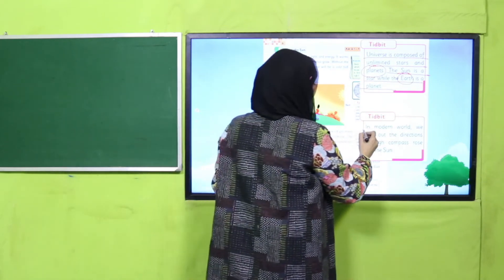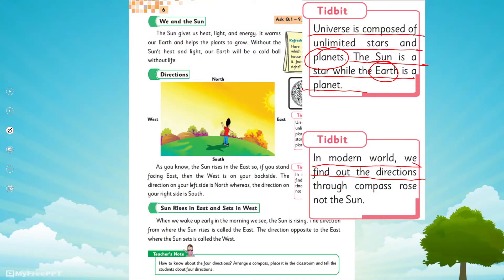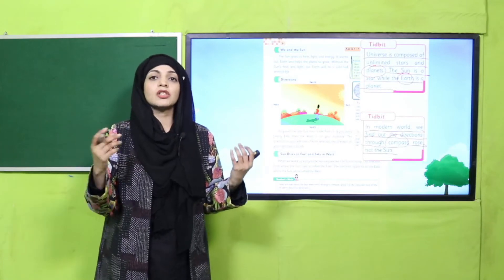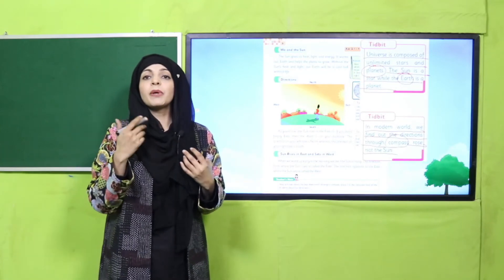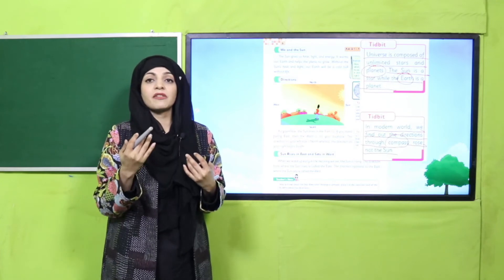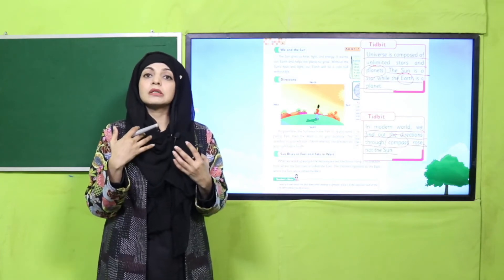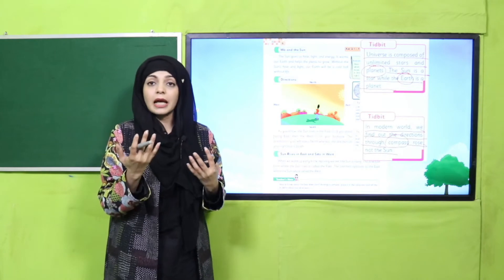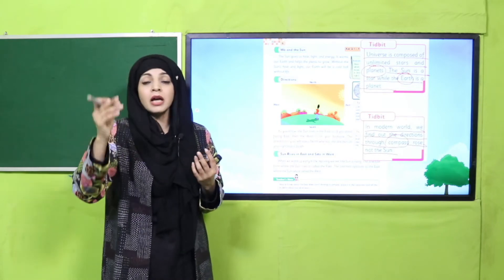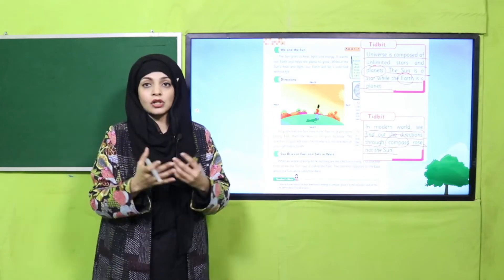In the modern world we find out directions through a compass rose, not the Sun. Aaj kal hum suraj se directions nahi dhundte. Pehle zamaane mein jab compass nahi hota tha, people used to find directions from the Sun. Log din ke time safar karte the kyunki unhe pata hota tha ke sun east se nikal raha hai, so they could find other directions.